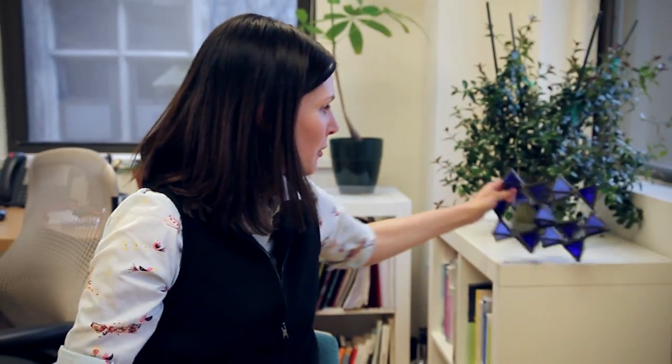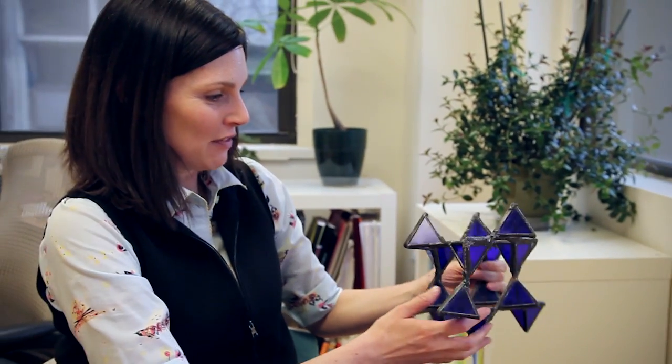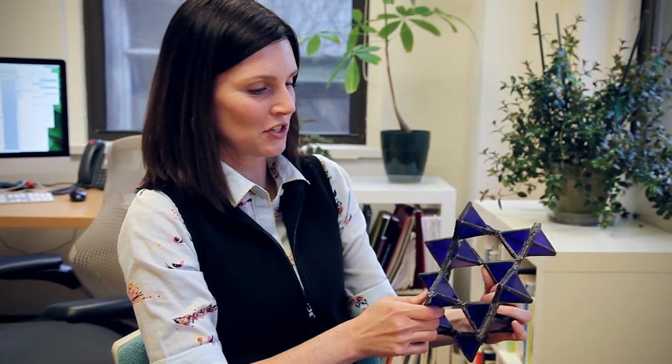So the basic framework we had was this kind of network of corner sharing tetrahedra and we were trying to understand how spins that are on all the vertices of a lattice like this would order.